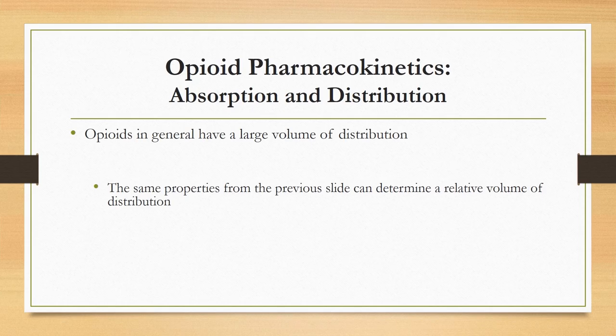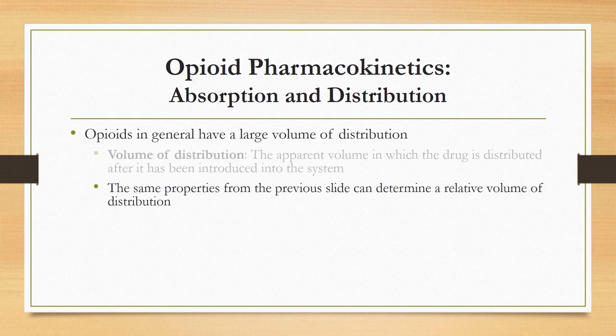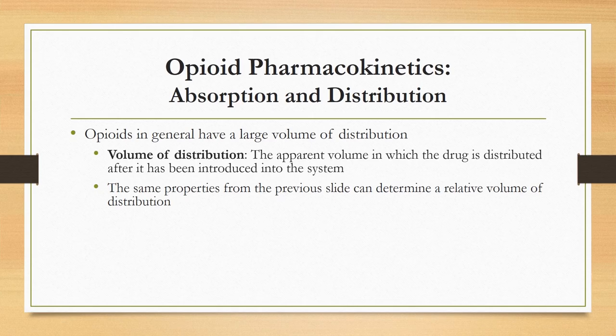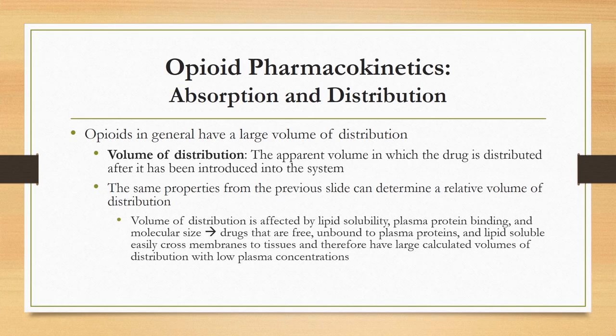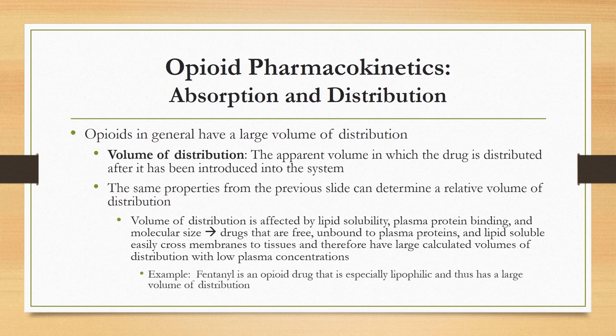Opioids in general have a large volume of distribution — the volume the drug disperses into after introduction into the system. Molecular size, lipid solubility, and plasma protein binding determine a relative volume of distribution. Drugs that are free or unbound to plasma proteins and that are lipid-soluble easily cross membranes to tissues, giving them large volumes of distribution with low plasma concentrations. Fentanyl is especially lipophilic and thus has a large volume of distribution.